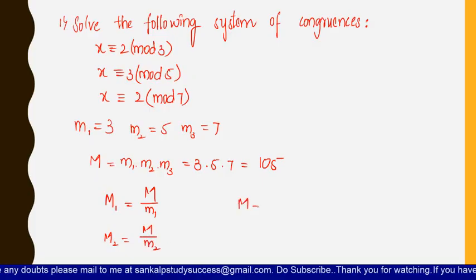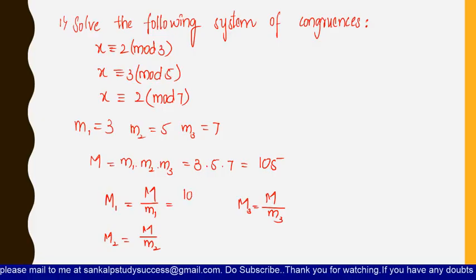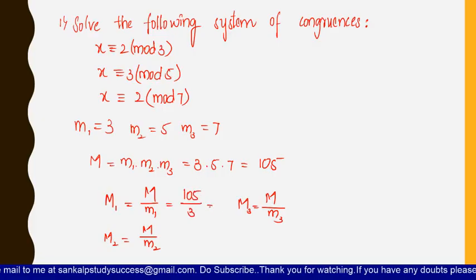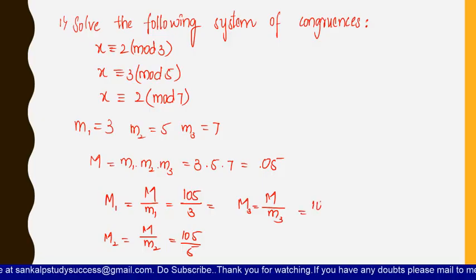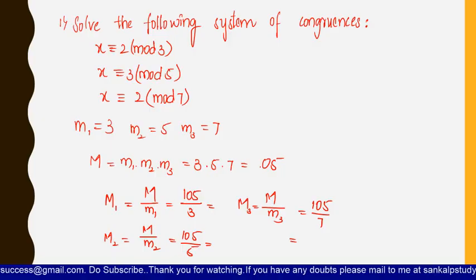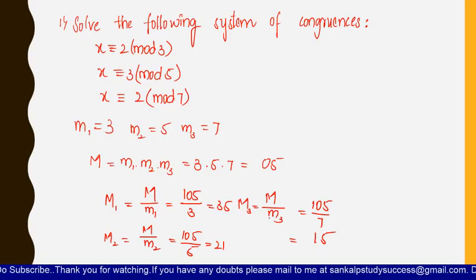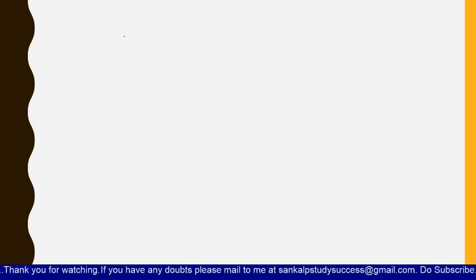Now let us find capital M1 = M/m1, M2 = M/m2, and M3 = M/m3. So 105/3 = 35, 105/5 = 21, and 105/7 = 15. So we got M1 = 35, M2 = 21, and M3 = 15.